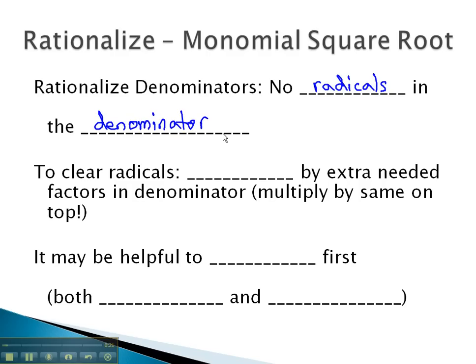If we do end up with radicals in the bottom of the fraction, we can clear them by multiplying by any extra needed factors in the denominator. Of course, as we do this, we'll need to multiply by the same thing in the numerator.